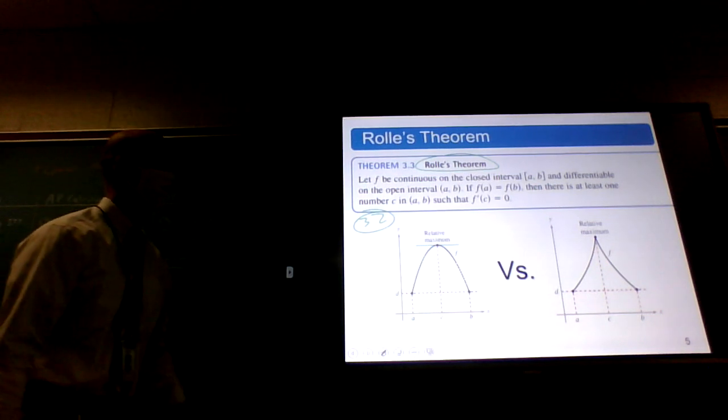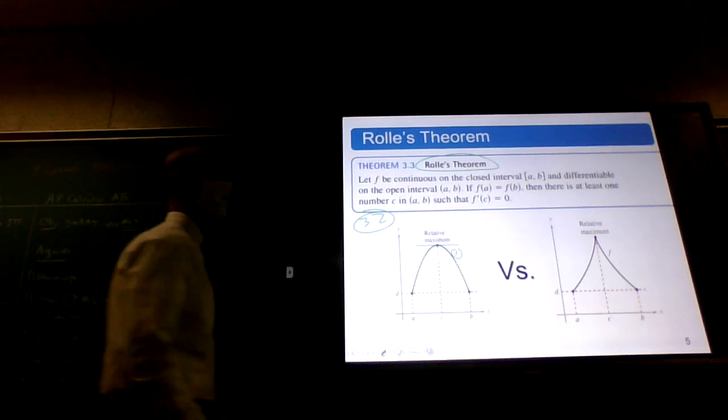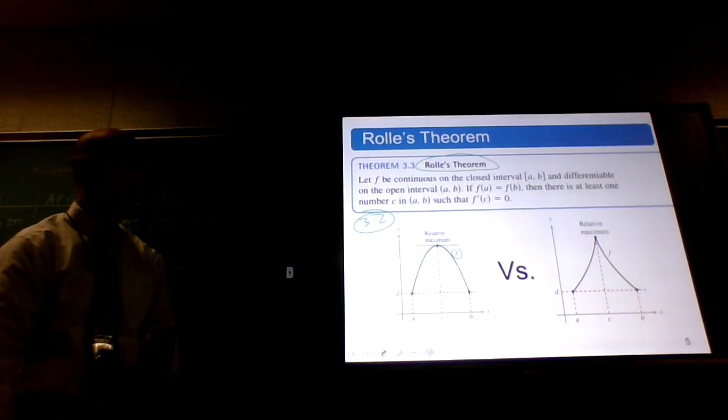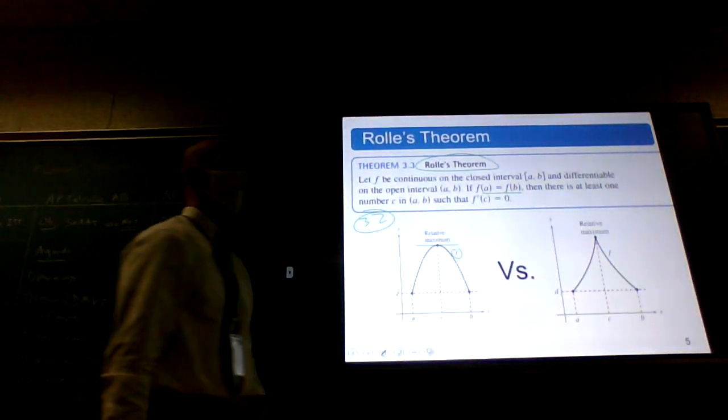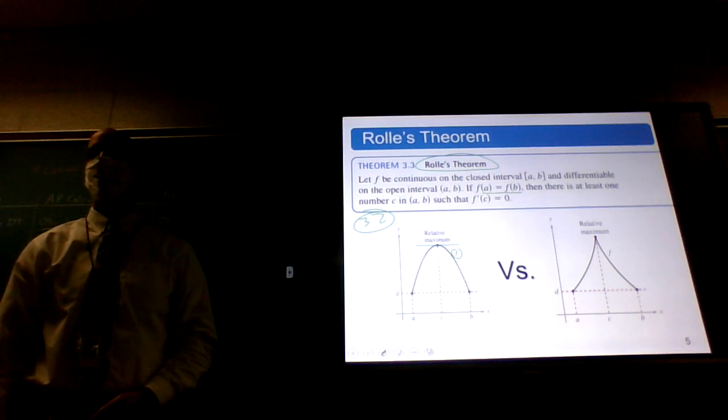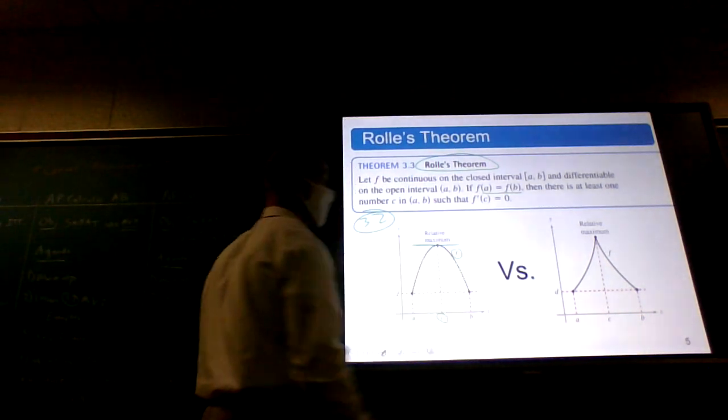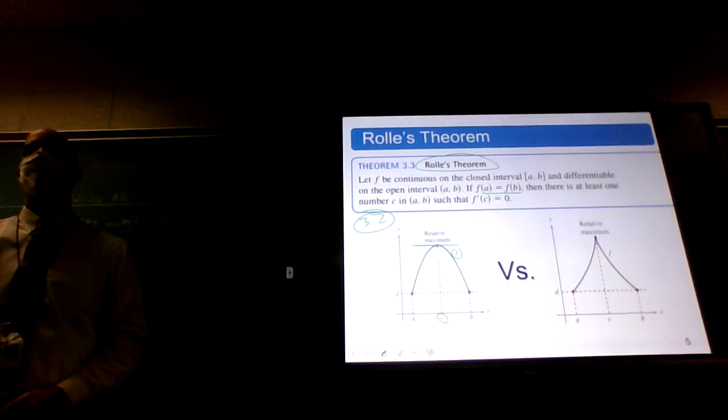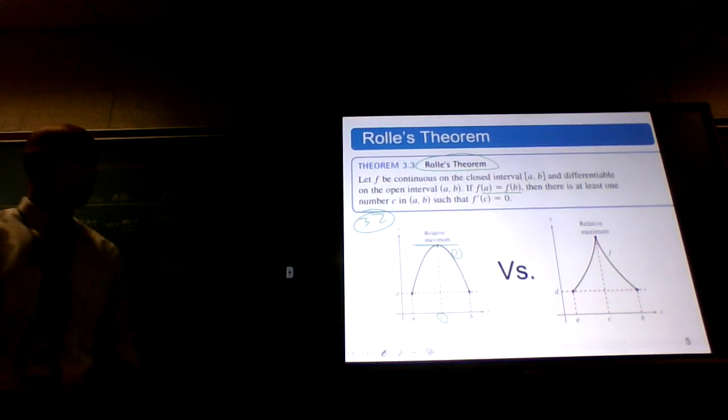One of them is Rolle's Theorem. So let me explain to you what Rolle's Theorem is. I hope that you've already watched the video that I posted in Canvas. Rolle's Theorem basically says this: If this function here, function f, if it is continuous and differentiable on an interval, and we know that f of a is equal to f of b, then there has to be some point c where the derivative there is equal to 0. That probably makes no sense, right?